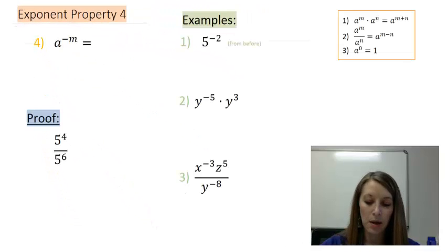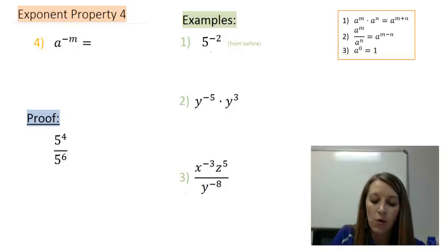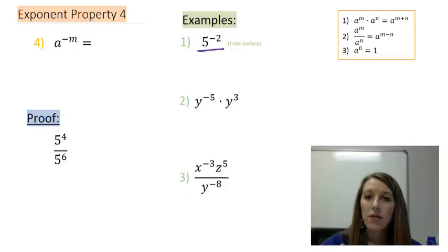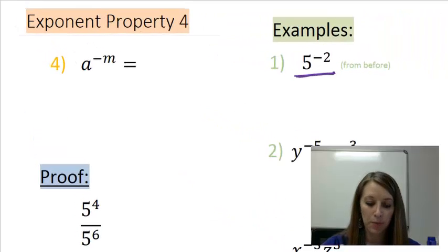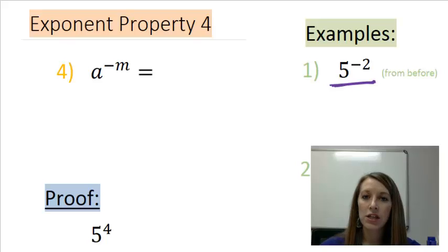So let's move on to exponent property number 4. This one is a to the negative m power. We can see that other example that I left open in the introduction video. So what does something to the negative exponent actually mean? I have an analogy to help us remember this and to help us not make that mistake that I did point out in the introduction video.